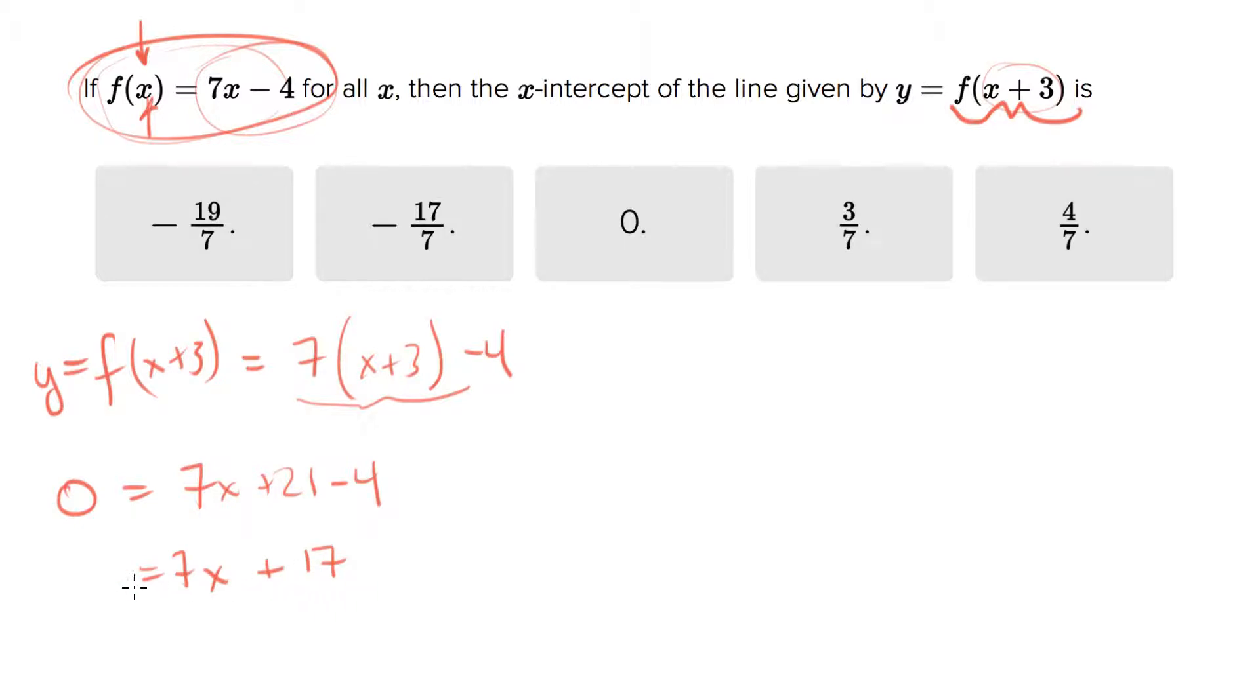And the answer will be, let's get negative 17 equals 7x and divide both sides by 7, and we'll have x equals negative 17 over 7, or the second answer choice.